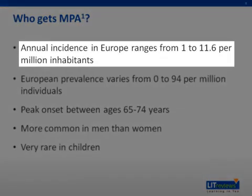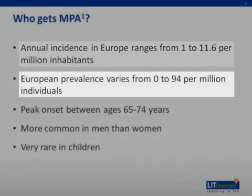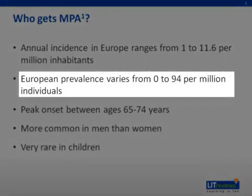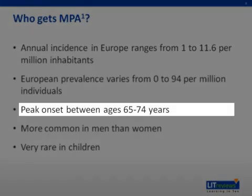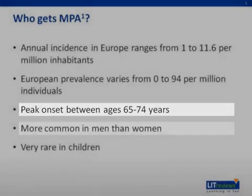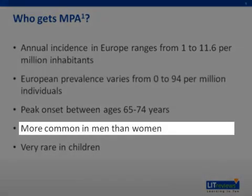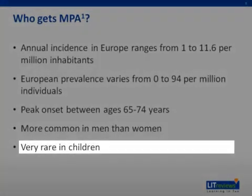The annual incidence in Europe ranges from 1 to 11.6 per million inhabitants, and the prevalence is around 0 to 94 per million inhabitants. The peak onset is between ages of 65 and 74. It is more common in men than women, and very rare in children.